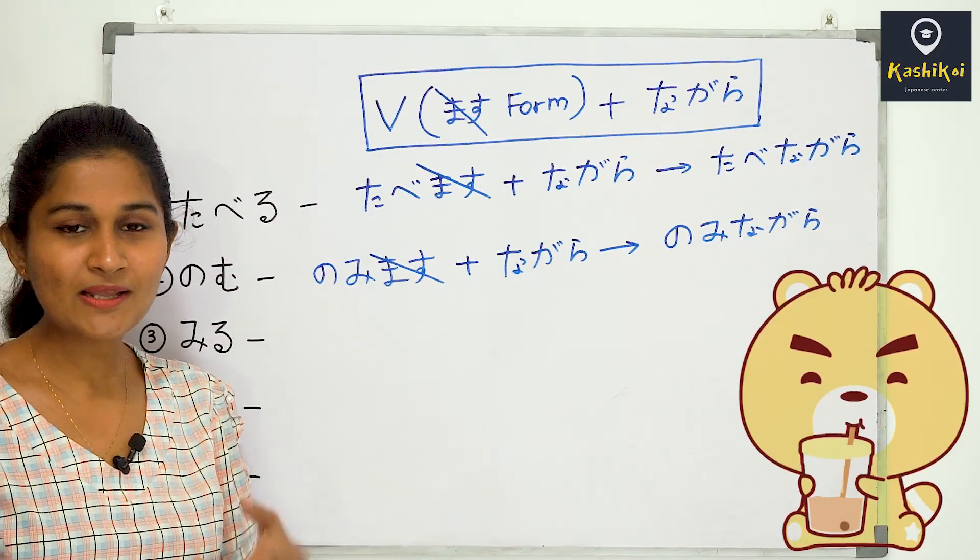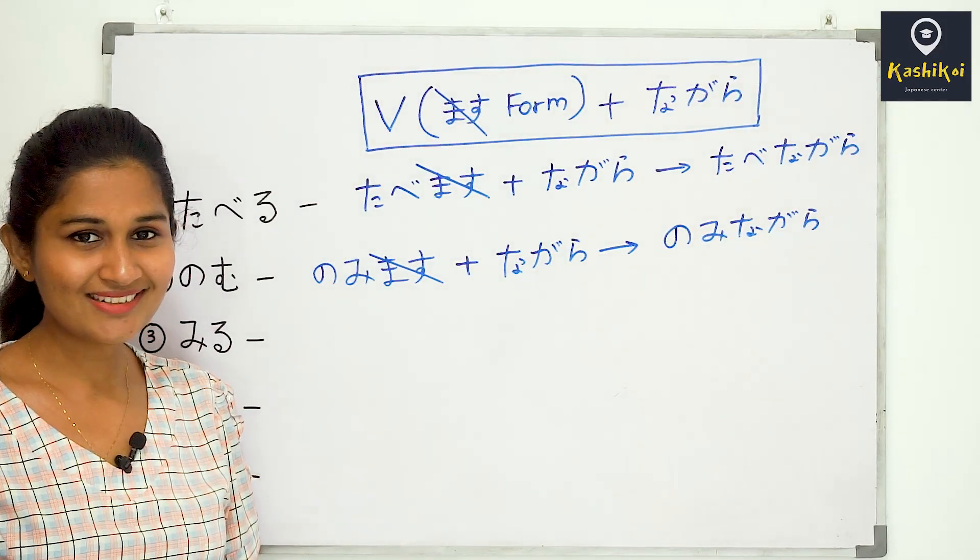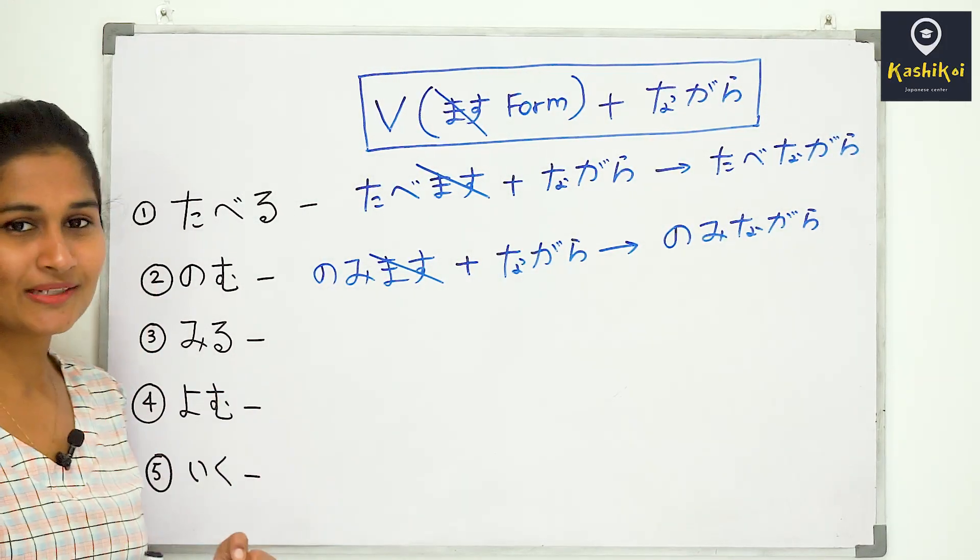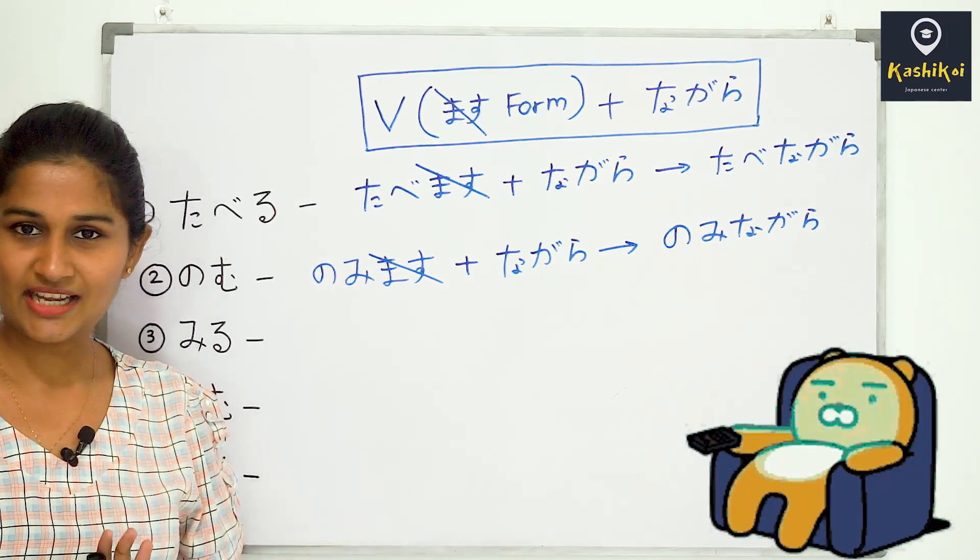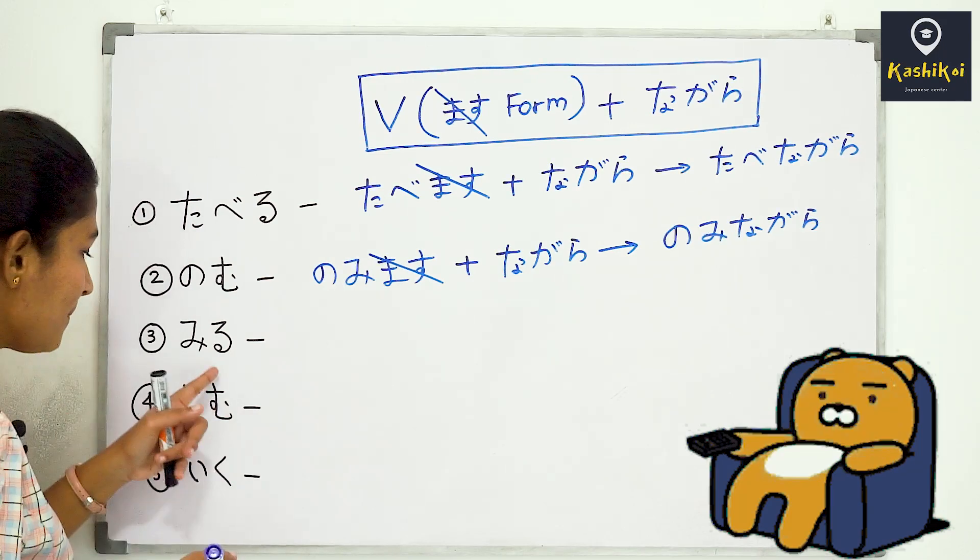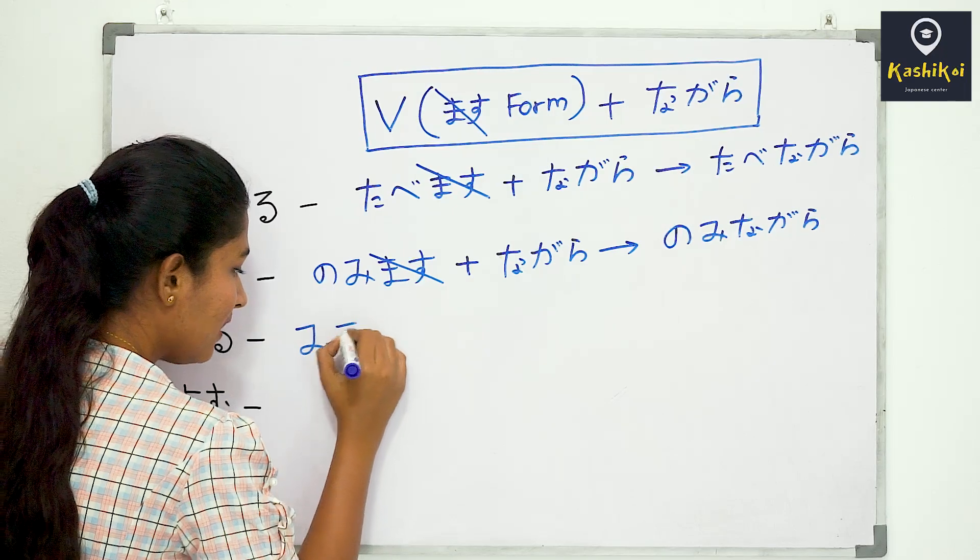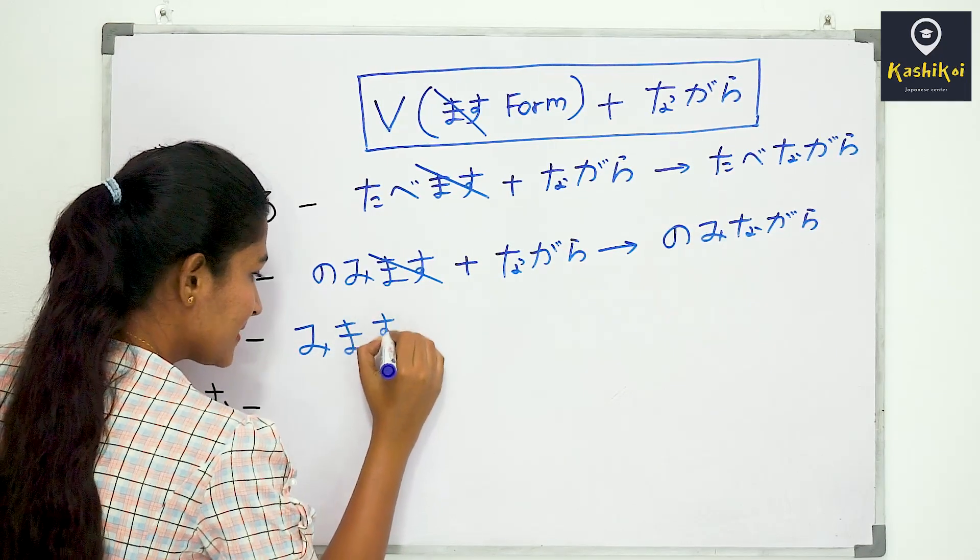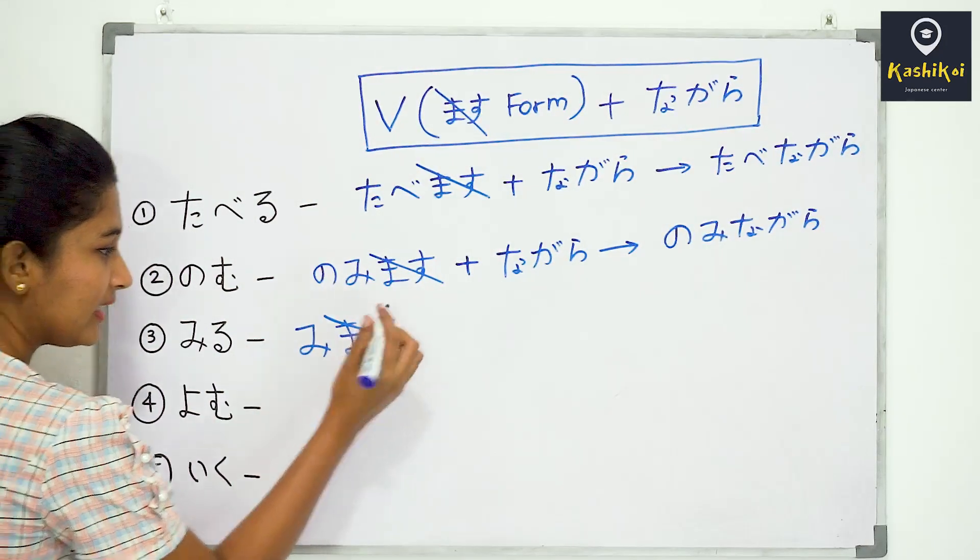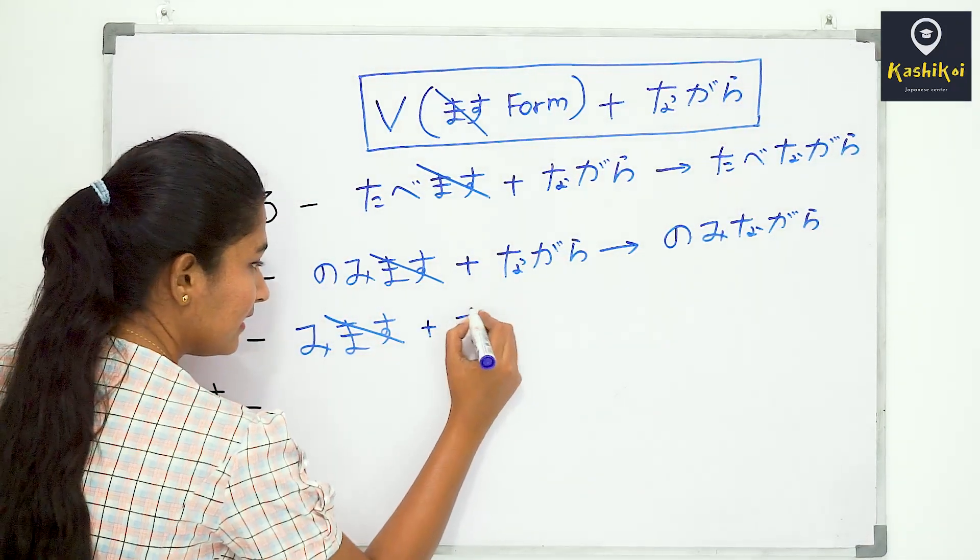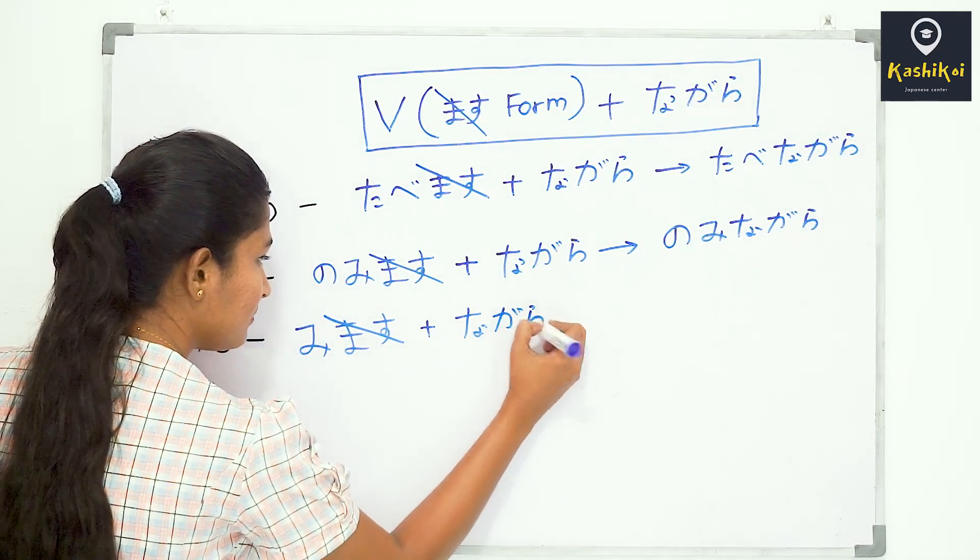Looking at the verb groups: for second group verbs like miru (to see), when we change to masu form it becomes mimasu. Then we add nagara. Miru becomes mi nagara, meaning 'while watching'. For first group verbs like yomu (to read), in masu form it's yomimasu, so nagara form is yomi nagara.